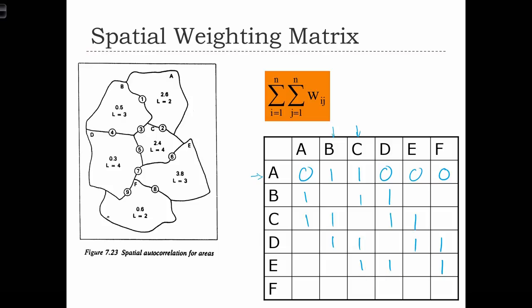So now we have our weight matrix. F is neighbors with D and E. And again, we have to put 0s everywhere else.